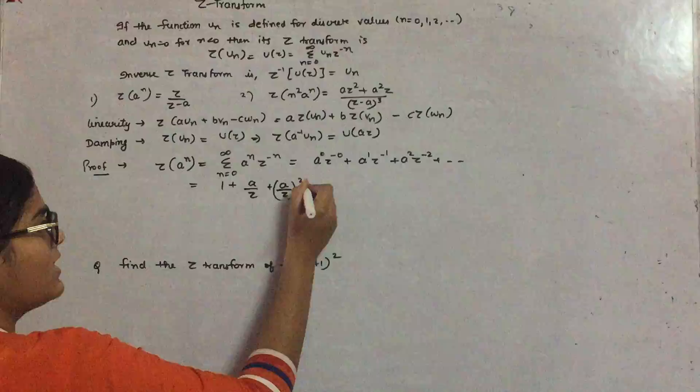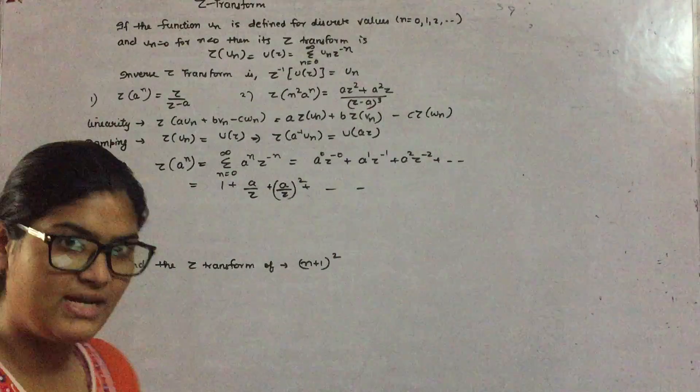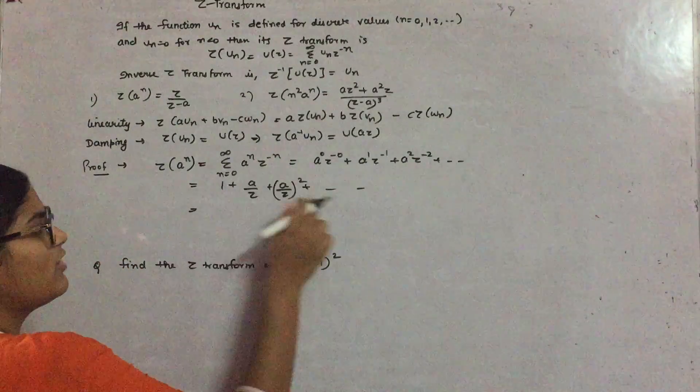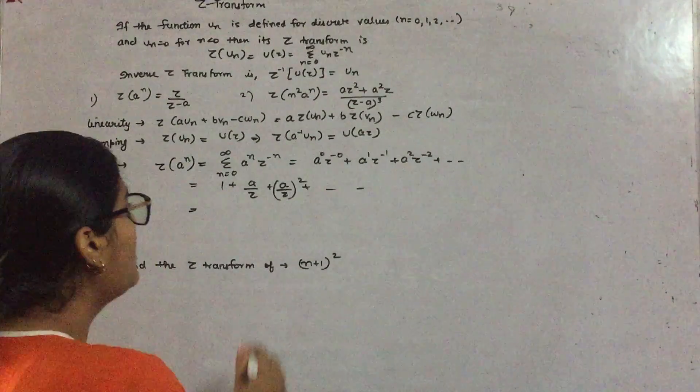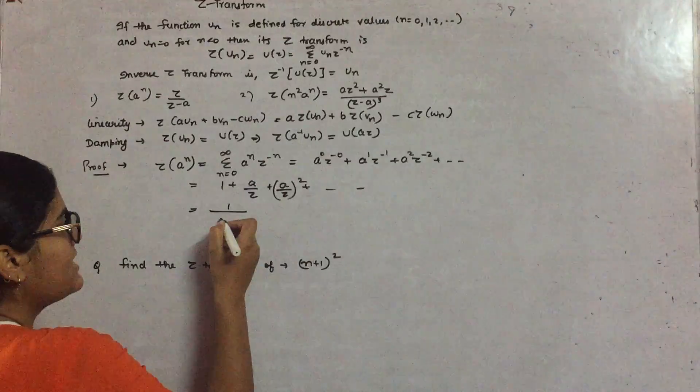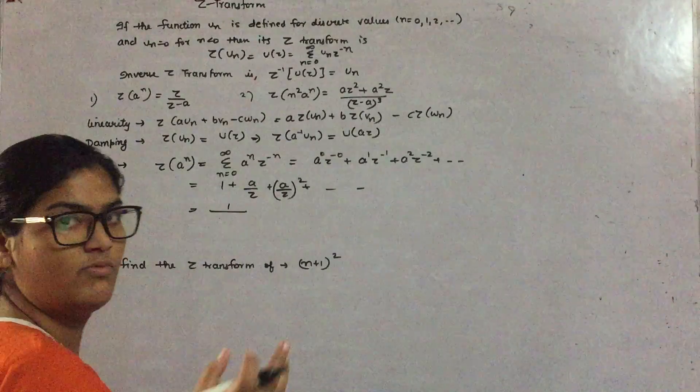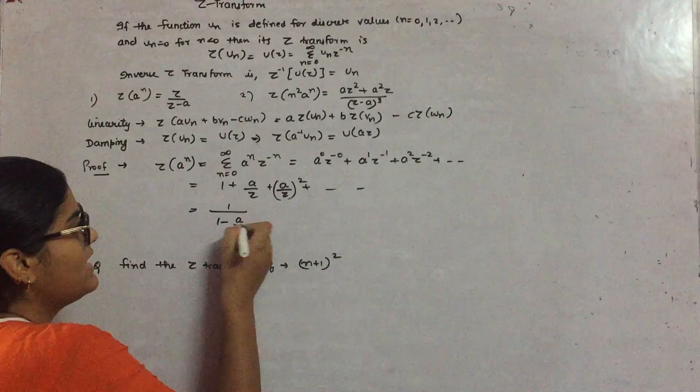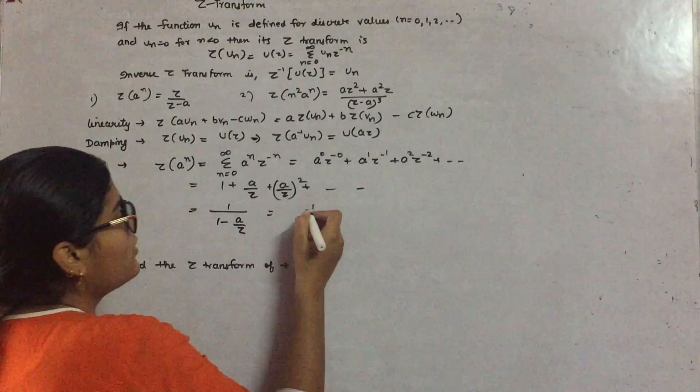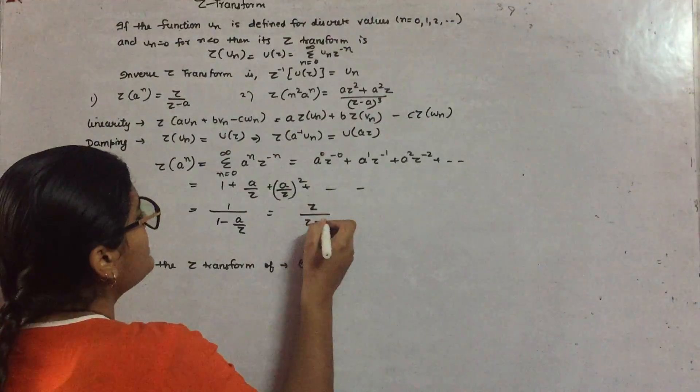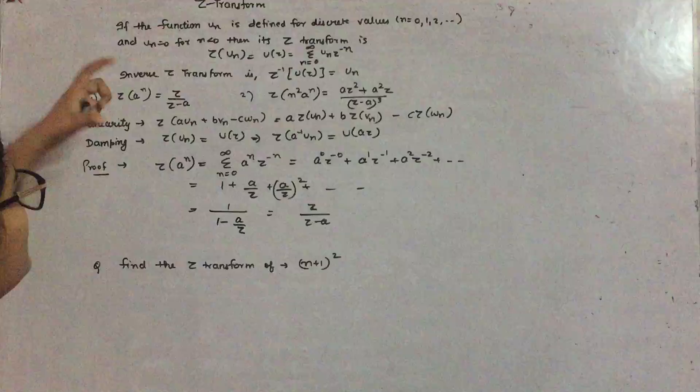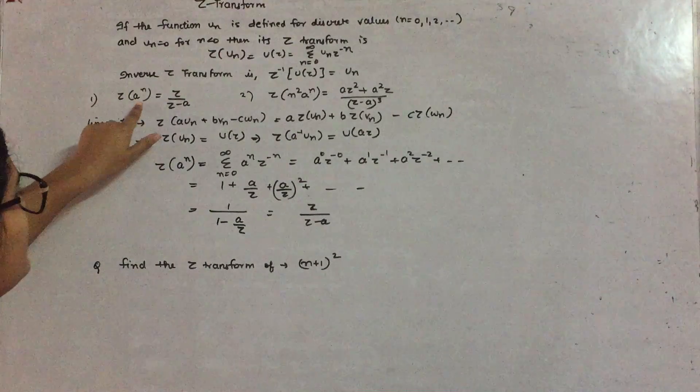So this is an infinite GP whose common ratio is a/z. What is the formula of sum of infinite GP? It is 1 upon 1 minus r. So 1 minus a/z becomes Z upon Z minus a. I hope you understand. In this way you can form the formula for Z transform.